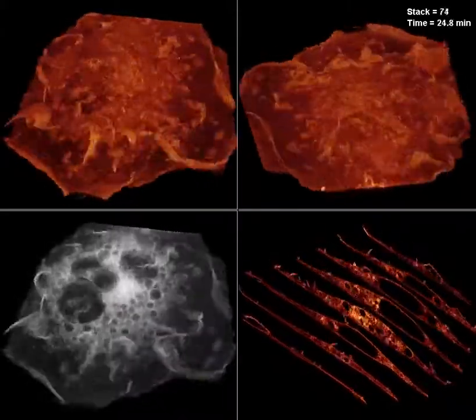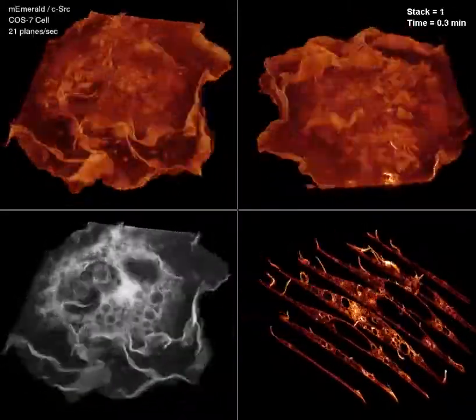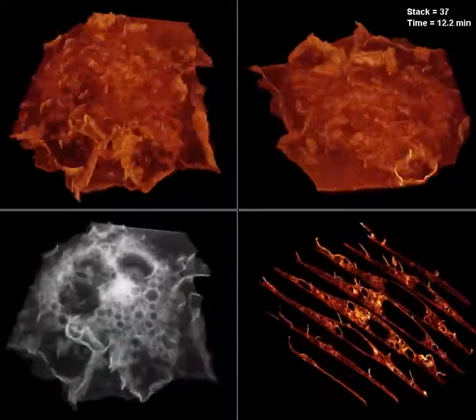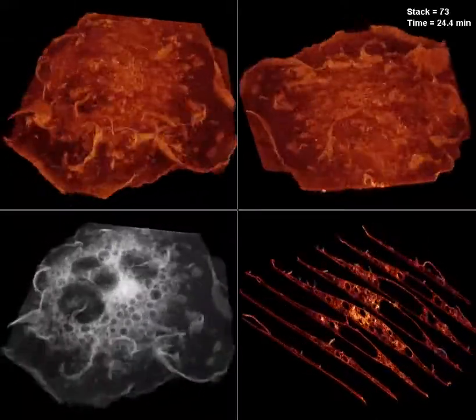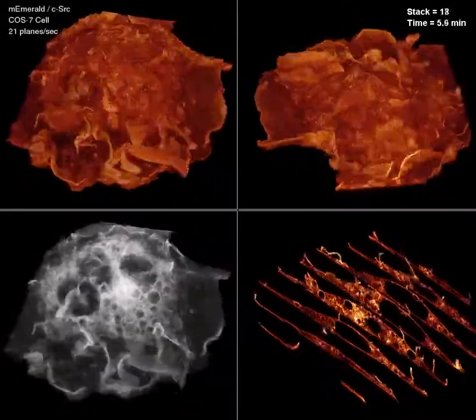In the four views you're seeing, on top are two different angles of the cell surface. Because the movie is a 4D movie of X, Y, Z, and T, we can present the data in different ways.